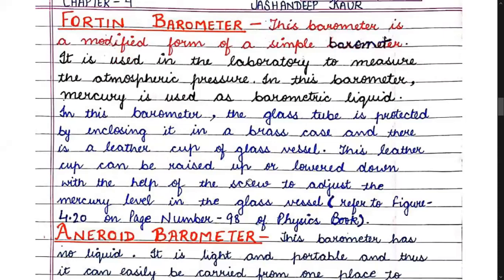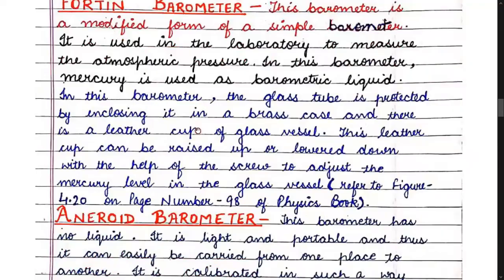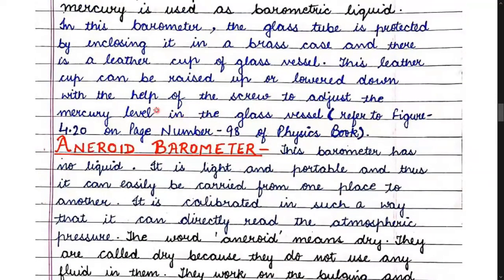The Fortín barometer is a modified form of the simple barometer that covers all its drawbacks, and it is used in the laboratory to measure atmospheric pressure. Mercury is used as the barometric liquid. The glass tube is protected by enclosing it in a brass case, and there is a leather cup that can be raised or lowered with the help of a screw to adjust the mercury level in the glass vessel. You can refer to figure 4.20 on page 98 of your physics book.